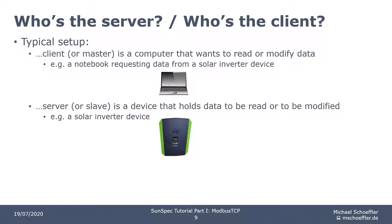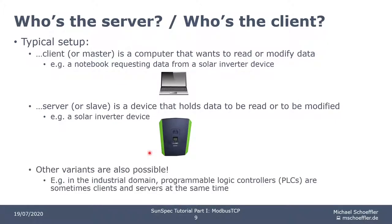But who is the server and who is the client? Here you see a typical setup. Normally, the client or master is a computer that wants to read or modify data — for example, a notebook requesting data from another device. The server or slave, on the other hand, is a device that holds data to be read or modified — for example, a solar inverter device. Keep in mind, there are also other variants possible. In the industrial domain, programmable logic controllers are sometimes clients and servers at the same time: they retrieve data from other Modbus servers, aggregate it, and then make the aggregated data available to other systems by opening their own Modbus server.